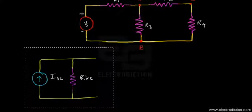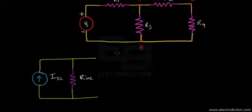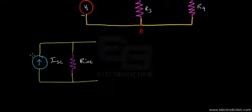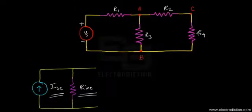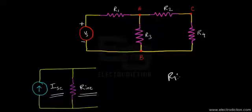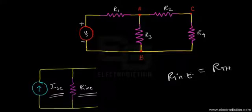This is the simplified Norton's equivalent network — it consists of a current source and the internal resistance of the entire network as obtained by applying Norton's theorem. The internal resistance R_int is the same as the Thevenin resistance obtained in the previous tutorial on Thevenin's theorem.